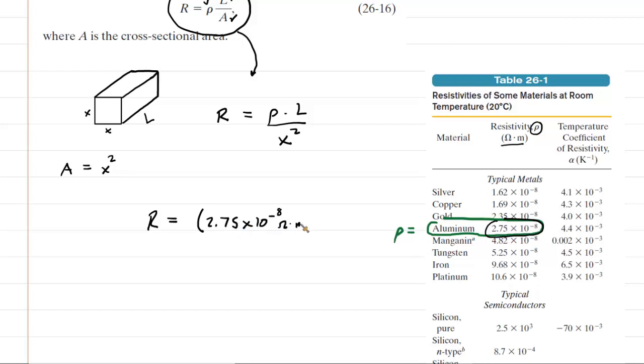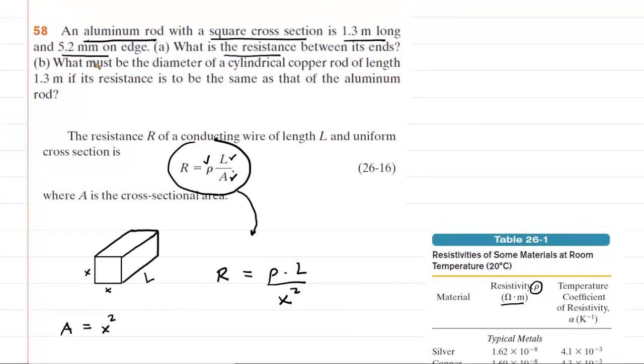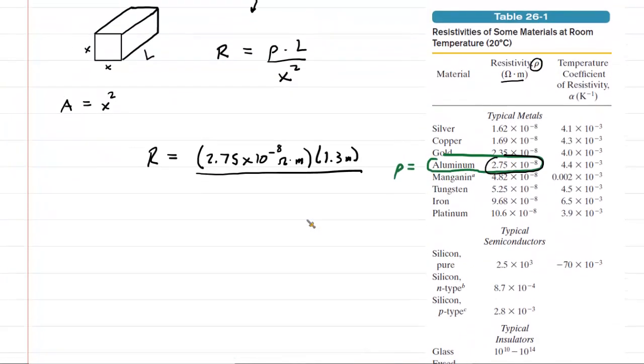And then divided by the edge length squared. The edge length was given in millimeters. It was 5.2 millimeters. So we actually must be careful here and change that to meters. So we'll do 5.2 times 10 to the minus three. That will now be in meters. Don't forget to square that.